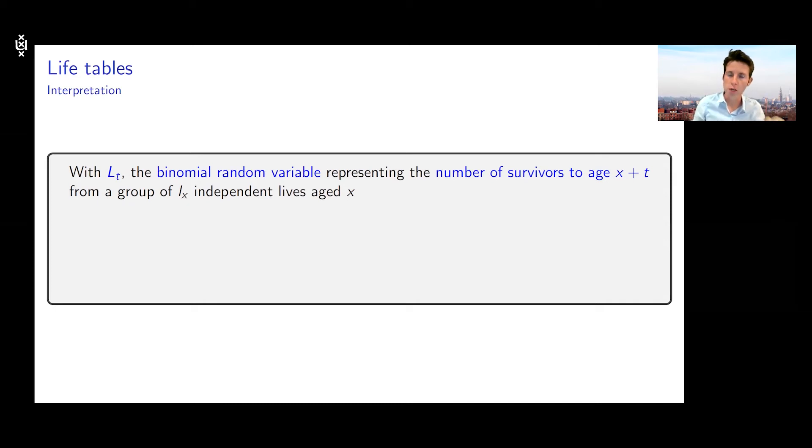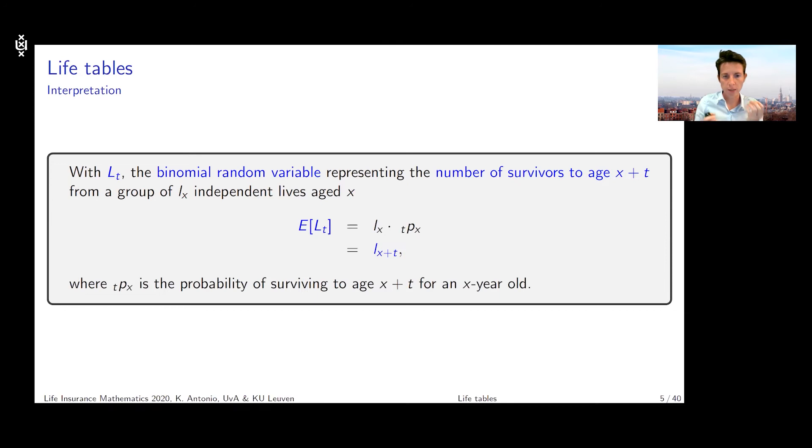This Lt random variable captures how many out of the initial group of size lx will reach age x plus t. If I use my knowledge of the binomial distribution, the expected value of Lt equals lx multiplied with the probability of success, tpx.